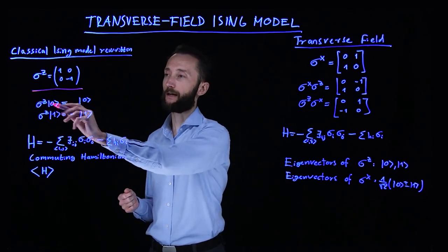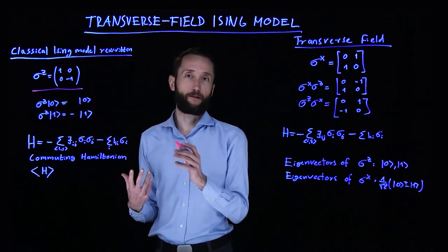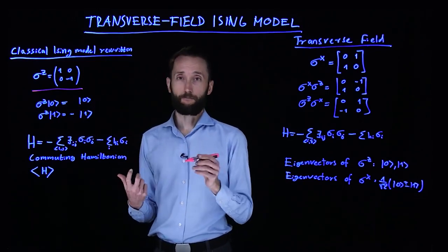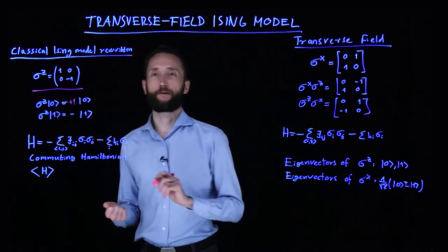When you apply this operator on the zero ket, you'll actually get the zero ket. It doesn't do anything to it, or you can think of it as adding a plus one multiplier to it.